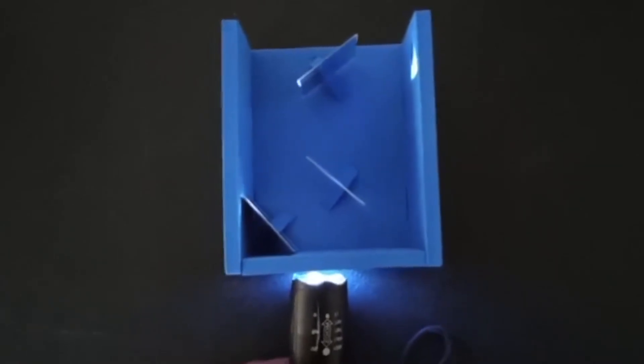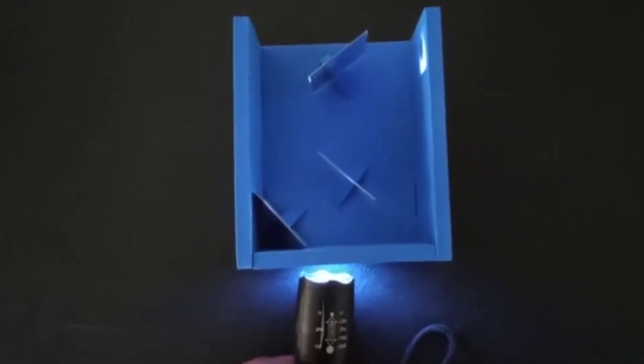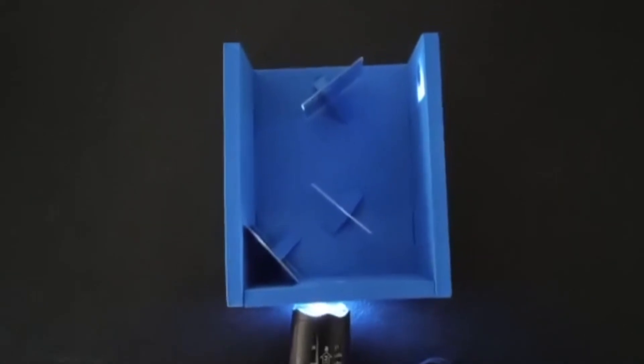Light reflects the same way off a mirror as it bounces off at the same angle that it struck the mirror.